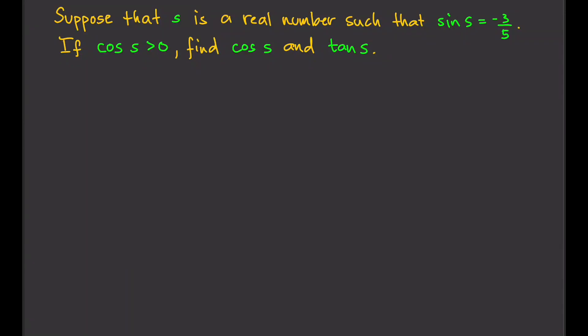Suppose s is a real number such that sine s equals negative three-fifths. If cosine s is greater than zero, find cosine s and tangent s. To solve this problem, we're going to need the unit circle.